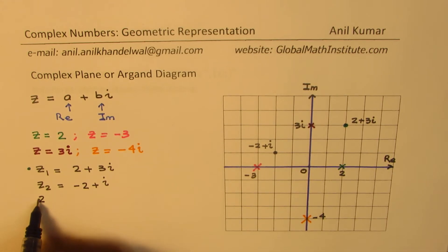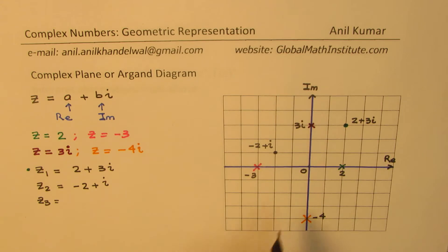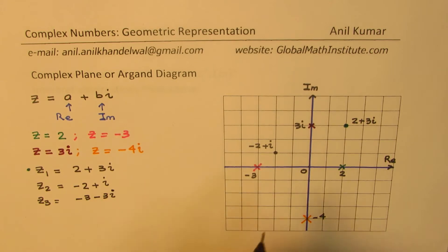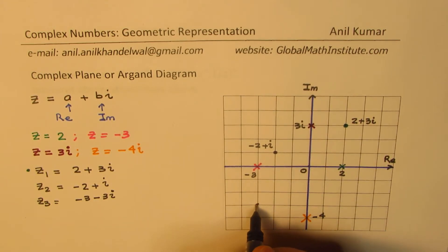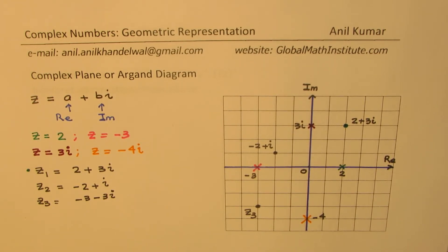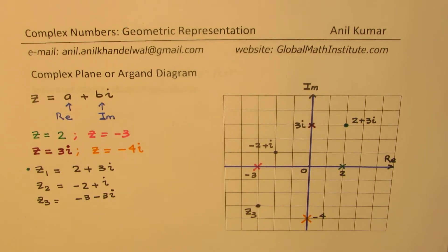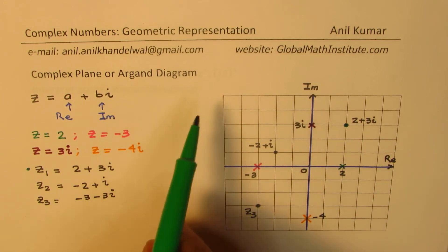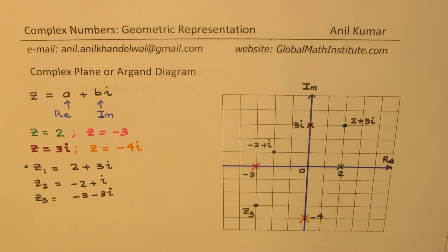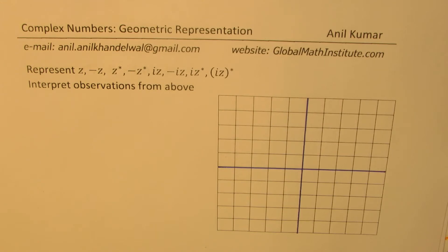Complex numbers with both negative real and imaginary parts are represented in the third quadrant. For example, if z3 equals minus 3 minus 3i, that point will be located here. So these are the ways in which you can represent a complex number on a plane. This plane is called the complex plane, and the diagram shown is called the Argand diagram.